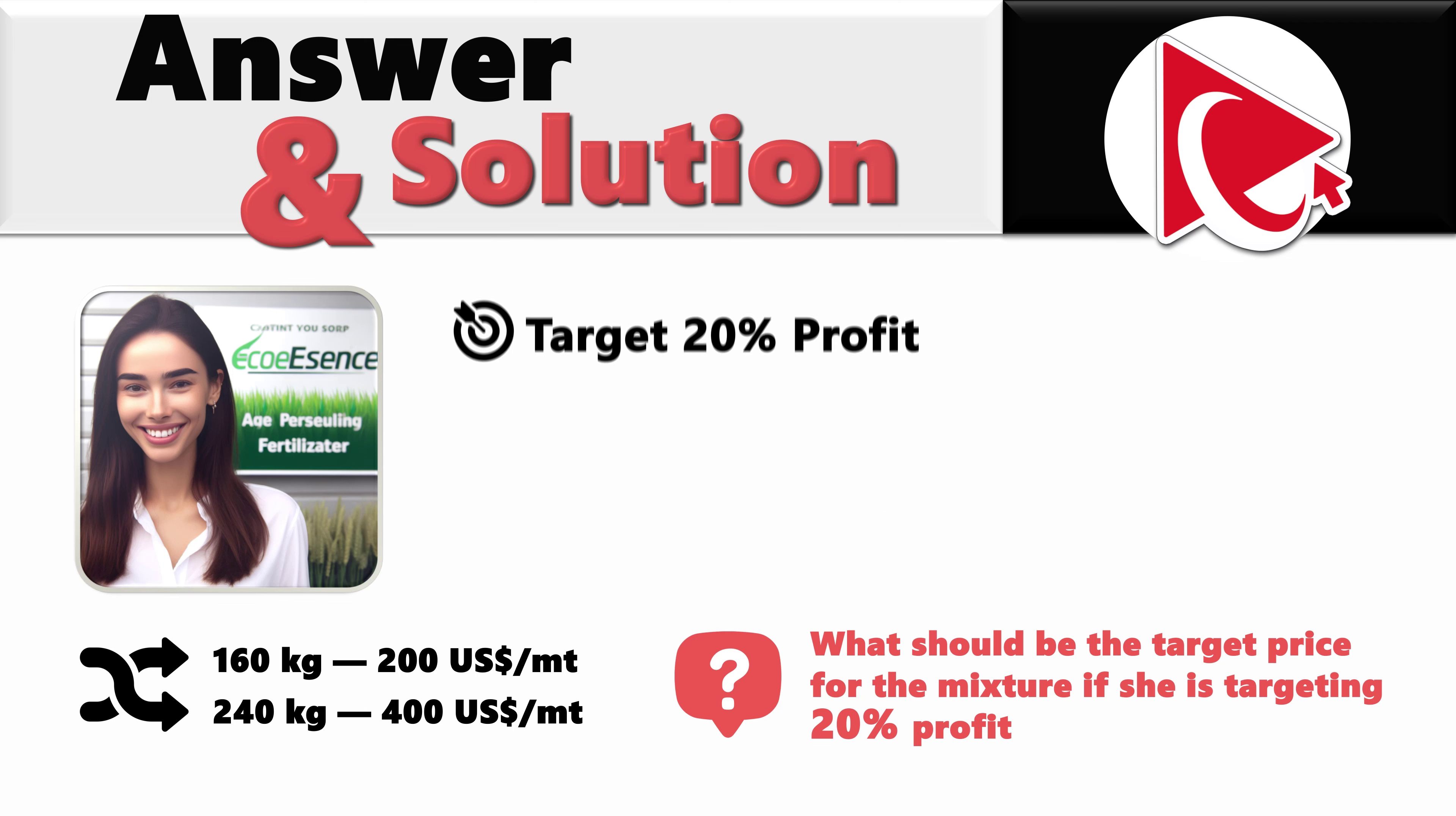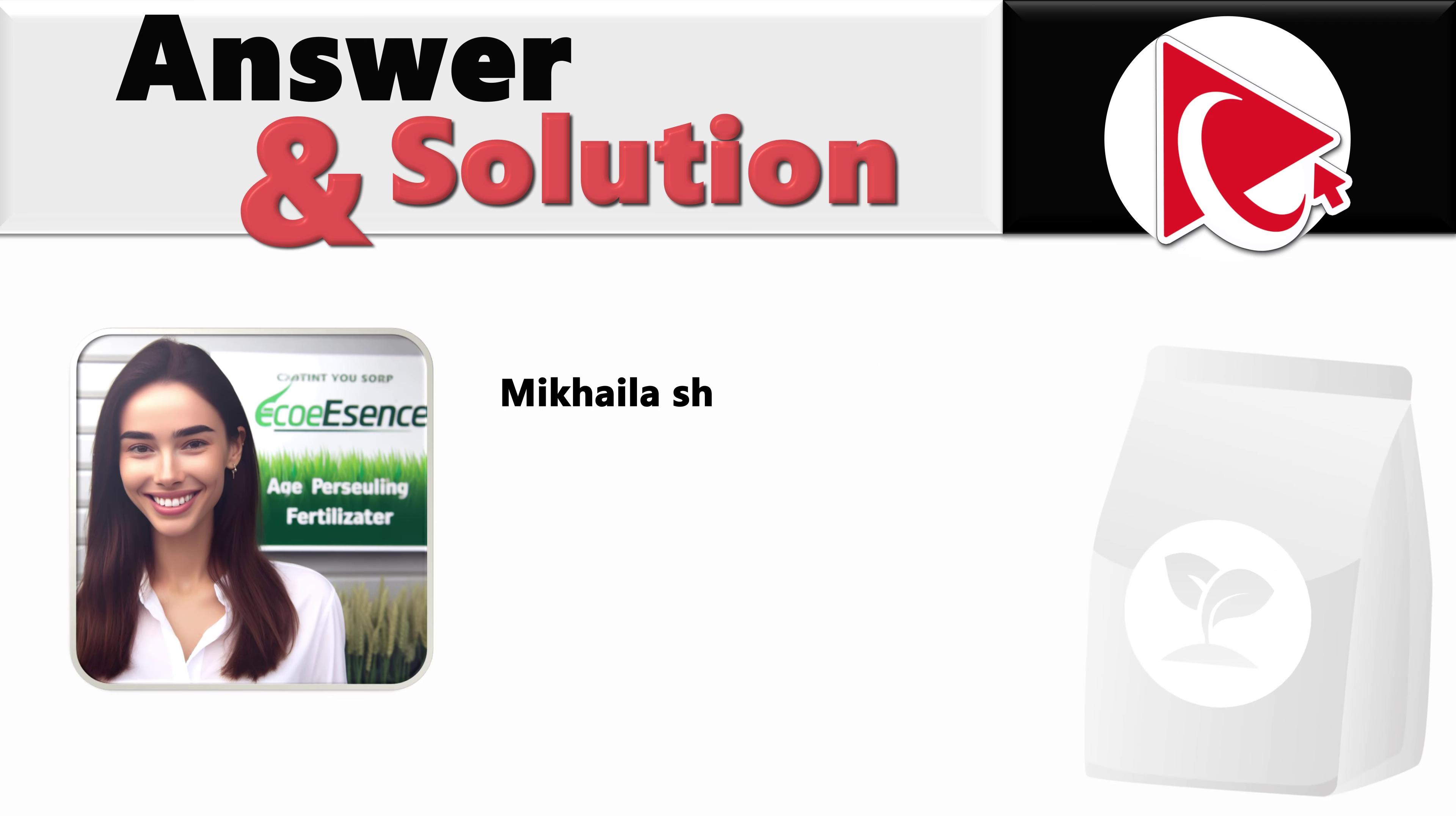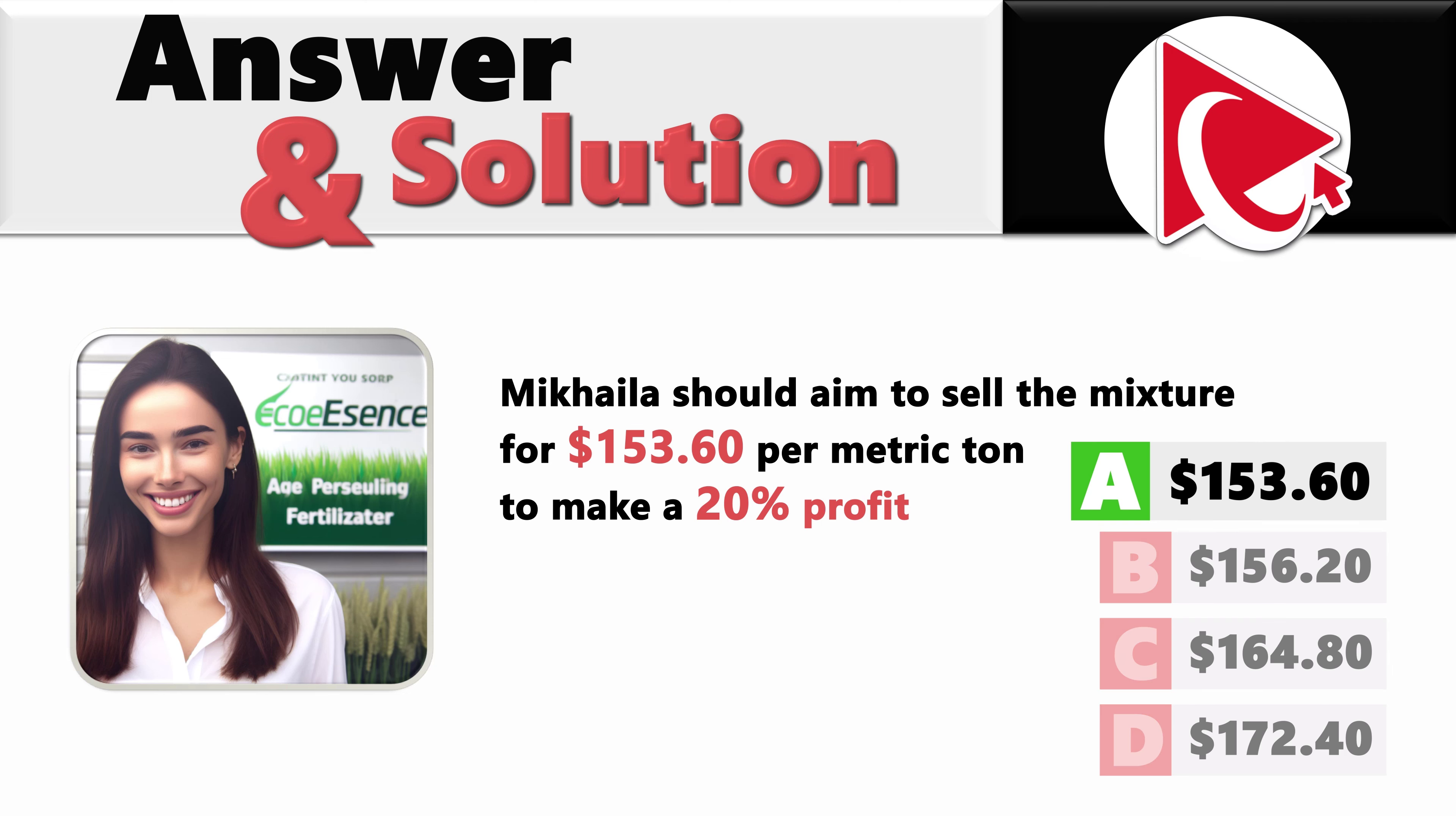The best way to add 20% profit is to understand that 20% profit equals 120% of the original cost, which means that the target price can be calculated as 128 multiplied by 1.2, and the end result of this would be 153.60. So Michaela should aim to sell the mixture for $153.60 per metric ton to make a 20% profit. And the correct answer here is choice A: $153.60.